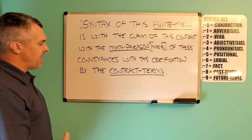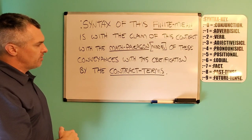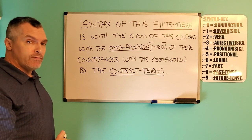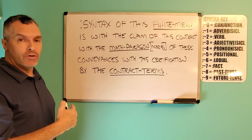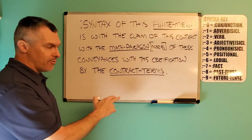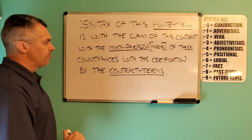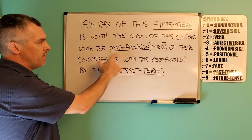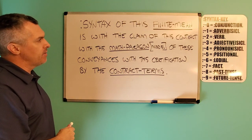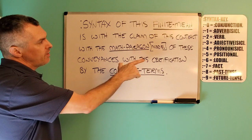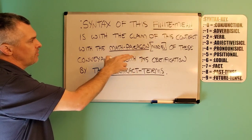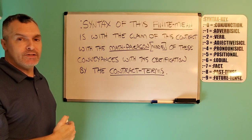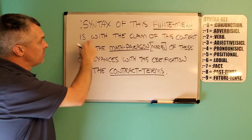The syntax — flip it backwards. The cause is the contract terms. What are the contract terms concerned with? Certification. Now we put our verb in, which would be plural — are — because the cause going backwards is contract terms, plural. Are, with these conveyances. What are the conveyances concerned with? The math paragon. Of the math paragon. With the contract — possessive. What is the contract concerned with? Of the claim — possessive. With this finite mean. And what is the authority of the finite mean? By the syntax.